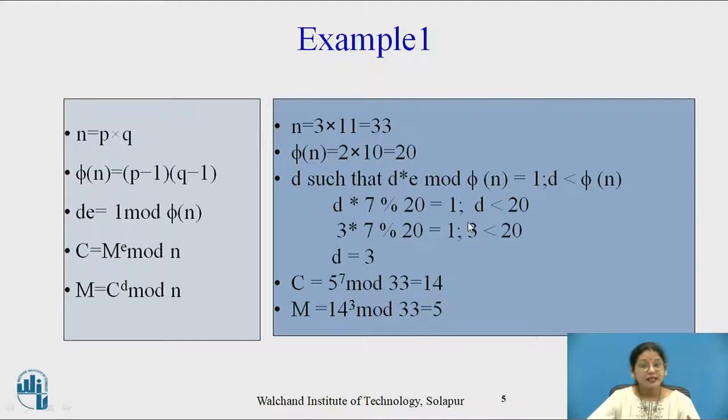So d=3, e=7. Ciphertext: 5 raised to 7 mod 33, where m is 5. By performing calculations we get 14. And original message: 14 raised to 3 mod 33 equals 5. Hope you all are getting how to perform the calculations. The main part here is determining d.